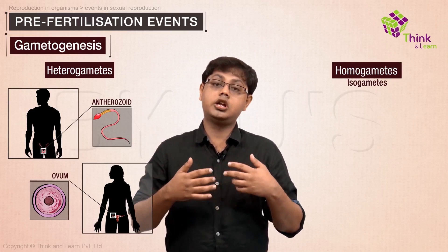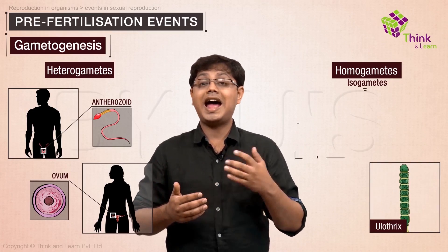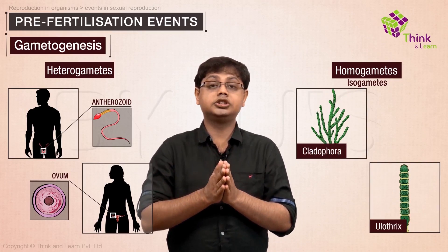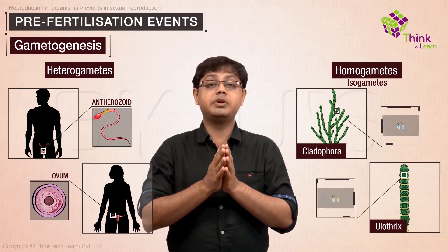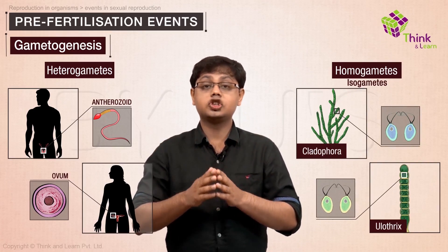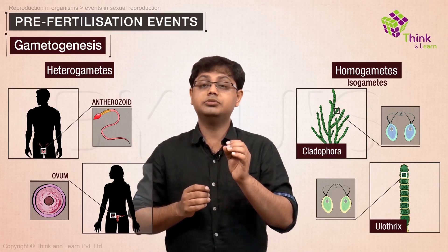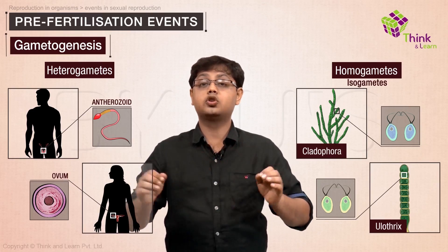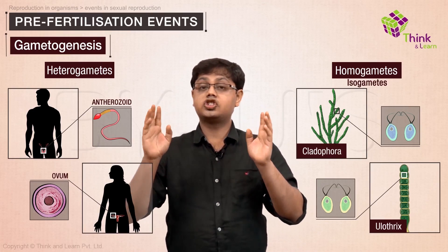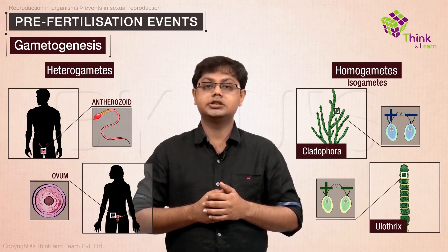The process involving isogametes is called isogamy. Examples include Ulotex and Cladophora. Here, sexual reproduction takes place between two different mating types — that is, two strains of the organism differing in some genes but with no distinct chromosomal differences. The mating types are generally denoted as plus and minus.